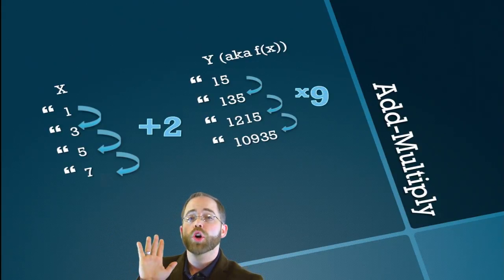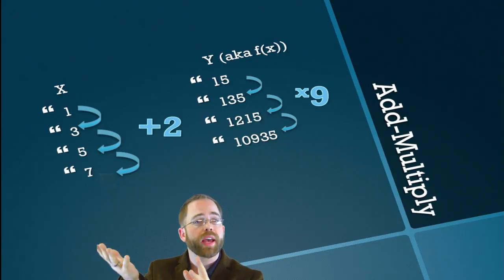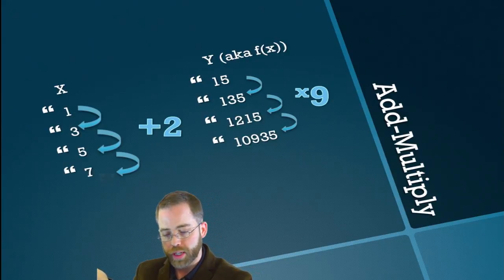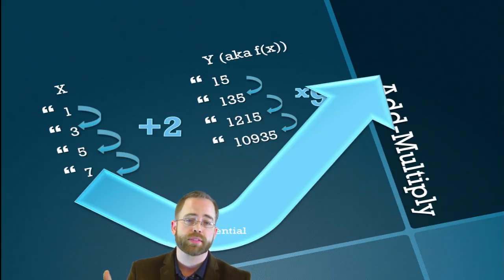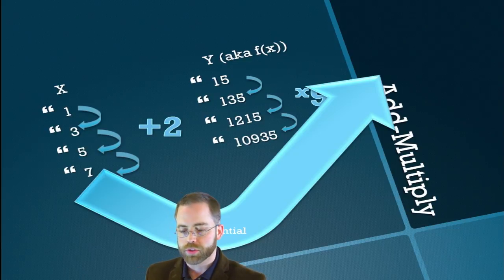So the X's are going up by 2, and those same matching sets are going up by multiplying by 9. So this is the pattern that we call add-multiply. X's are adding. Y's are multiplying. And this means it's an exponential function. X is the exponent. We need to find A times B to the X kind of equation to match this data.